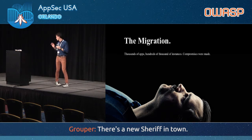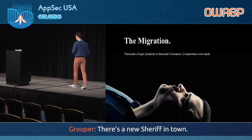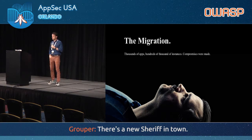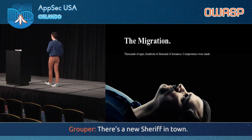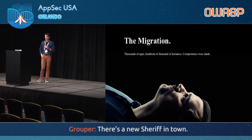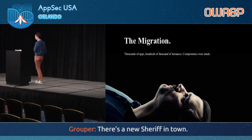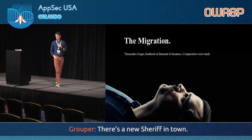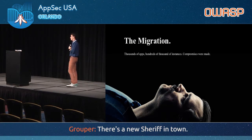We were in that deprecated state for a long time, and only about a year ago did we undertake the migration from EC2 Classic to VPC. As a cloud-first company, Netflix had probably thousands of applications and hundreds of thousands of instances in the classic stack. Moving them to a new networking paradigm was a big challenge — it took a lot of time and engineering effort to go from things being generally accessible to having to worry about subnets, IP space, and routes.